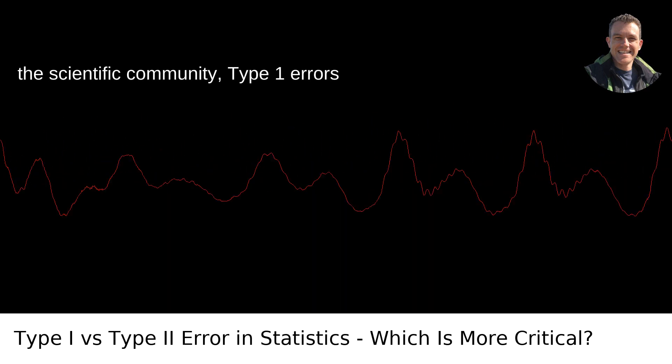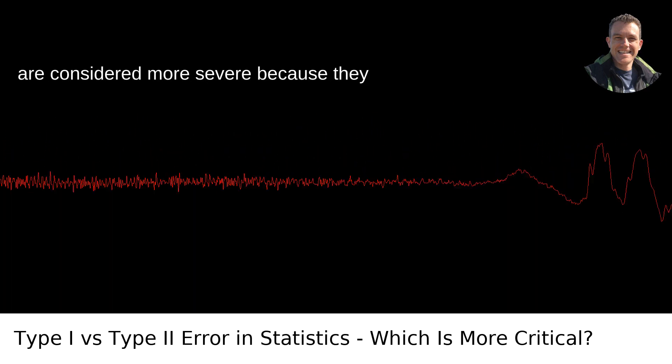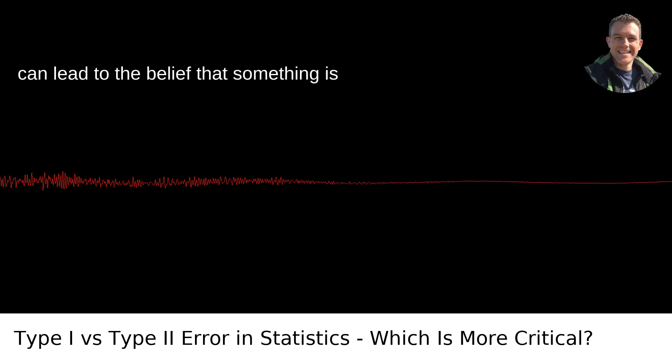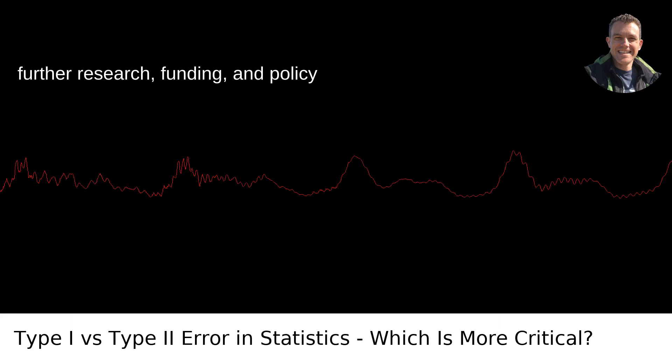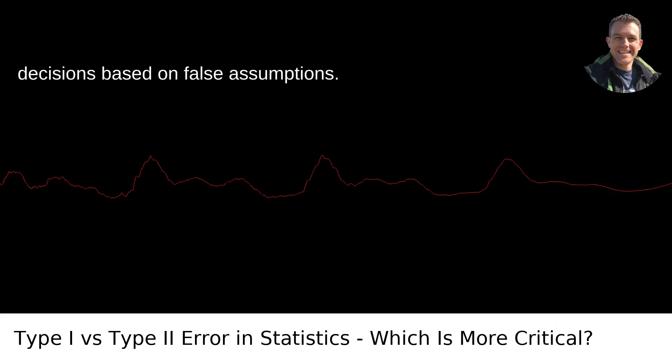In the scientific community, Type 1 errors are considered more severe because they can lead to the belief that something is true when it's not, potentially leading to further research, funding, and policy decisions based on false assumptions.